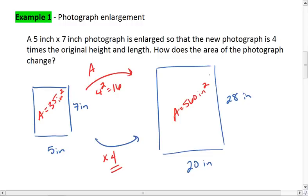560 is 16 times 35, so again we see that increase by a factor of 16. What matters is that the area is 16 times larger, and that's because 16 is 4 squared.